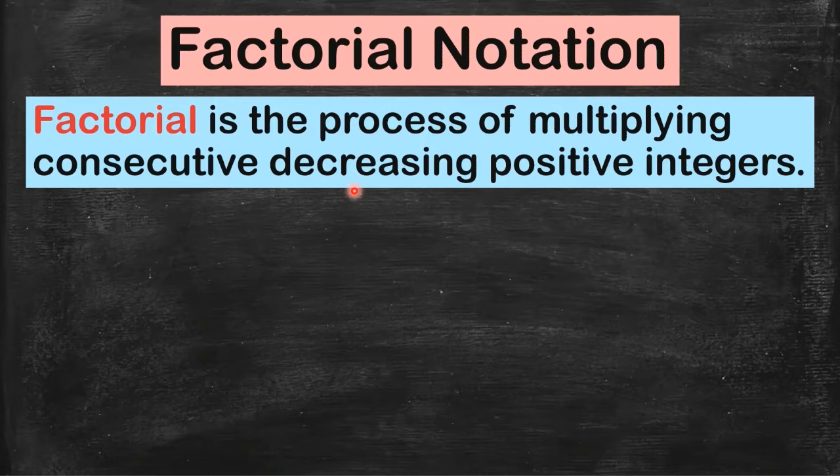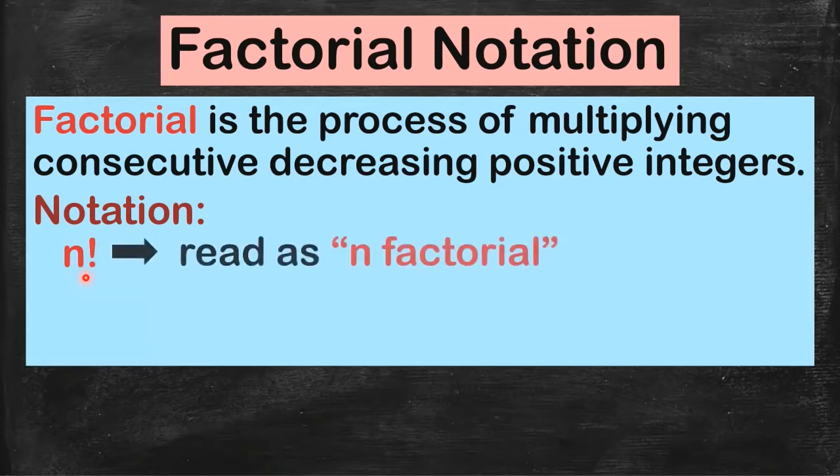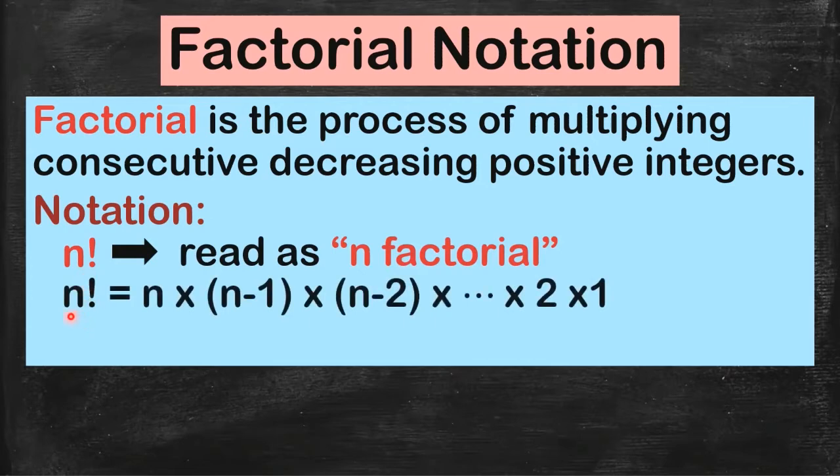This is our notation for factorial. We have n and then an exclamation point. Your n here is a whole number. How do we read this? It is read as n factorial or factorial of n. So how do we get the value of n factorial?